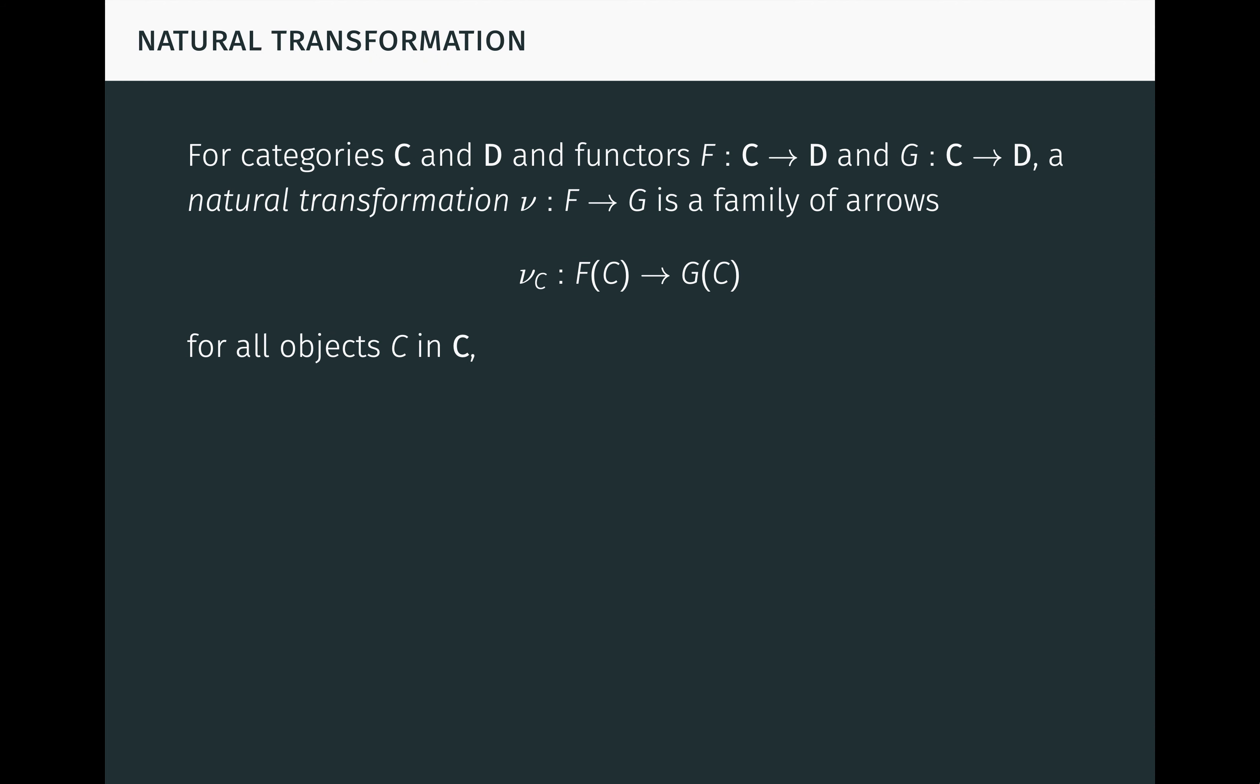In general, for arbitrary categories C and D, and functors F and G from C to D, a natural transformation nu from F to G is a family of arrows nu C from FC to GC for all objects C in C, such that for all arrows f from A to B in C, this diagram commutes.